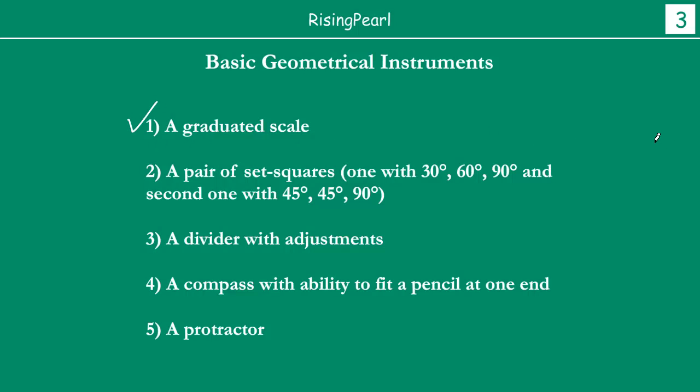So, a graduated scale, Dostho, in a very simple language is — koi bhi aap ruler, aap jab bhi ek ruler dekhte ho, ek scale dekhte ho aapke geometrical box mein, aap dekhte ho — us mein ya toh millimeter, centimeters, inches yeh clearly mark ki hoi rahti hai. Usse ham kahte hain graduated scale.